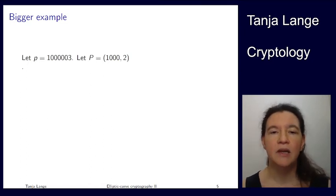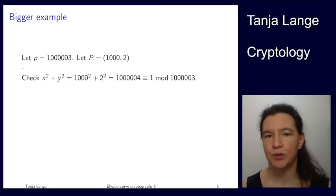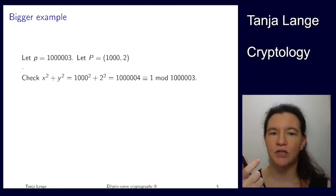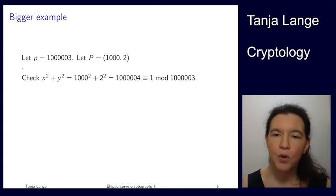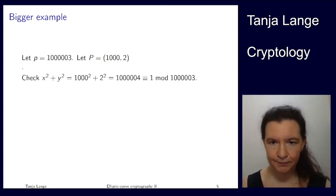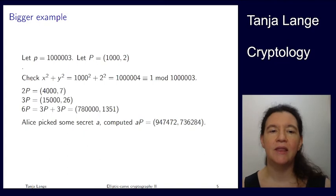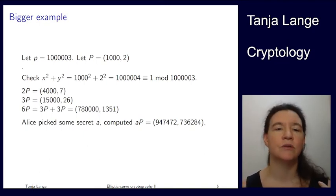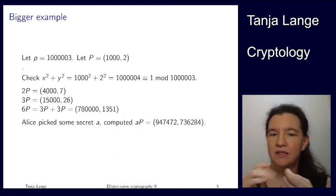So here's a bigger example. We're taking now 1,000,003, and here's a point—at least I claim it's a point on the curve—namely (1000, 2). Let's verify that this point is actually on the curve, so we're checking that x² + y² ≡ 1 (mod p). 1000² gives 1,000,000; 2² gives 4, so we're looking at 1,000,004, which indeed is 1 mod 1,000,003. Okay, good. That's convincing. So we now have a point on the clock mod 1,000,003, and then we can go ahead and compute 4 times a point, 3 times a point. Okay, that is still seeing some form of growth—the reduction hasn't kicked in there yet, but soon after you're going to see something.